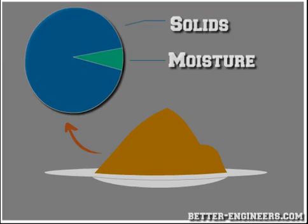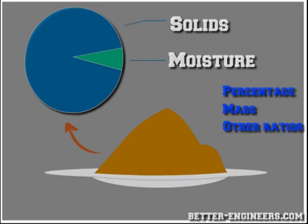Moisture content refers to the amount of water that a sample contains. It can be expressed as a percentage, mass, or other type of ratio.